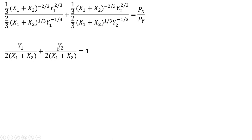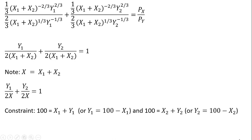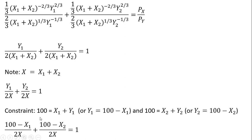We note that x is just the amount of fireworks from person 1 plus person 2, so we make that substitution. Recalling that the constraints for each consumer were 100 = x subscript 1 plus y subscript 1, and 100 = x subscript 2 plus y subscript 2, we substitute y subscript 1 with 100 minus x subscript 1 and do the same for y subscript 2. Making those substitutions and eliminating the y terms, we get this result.